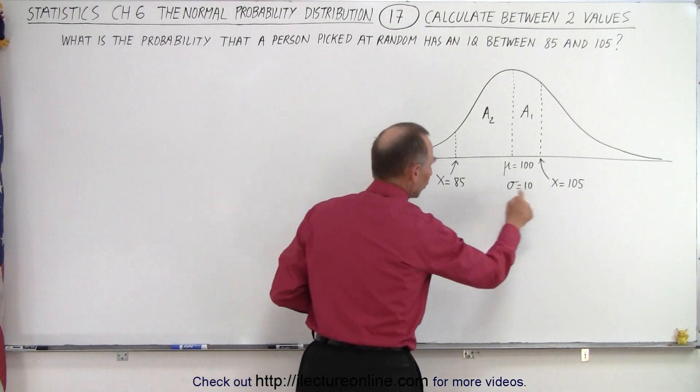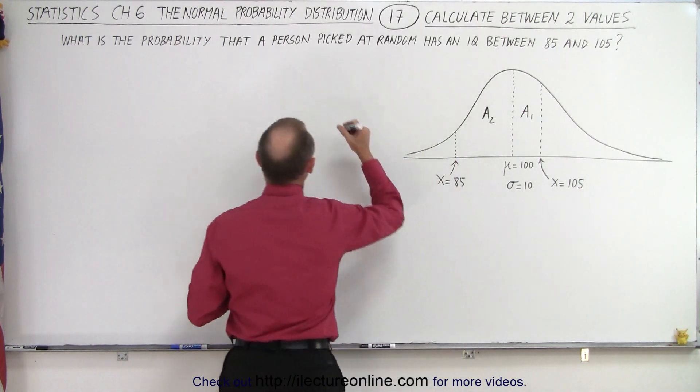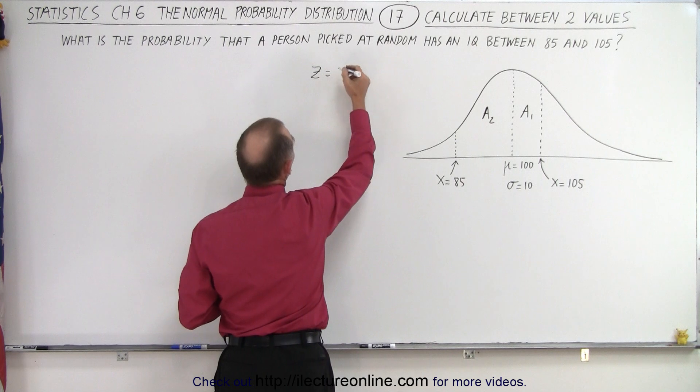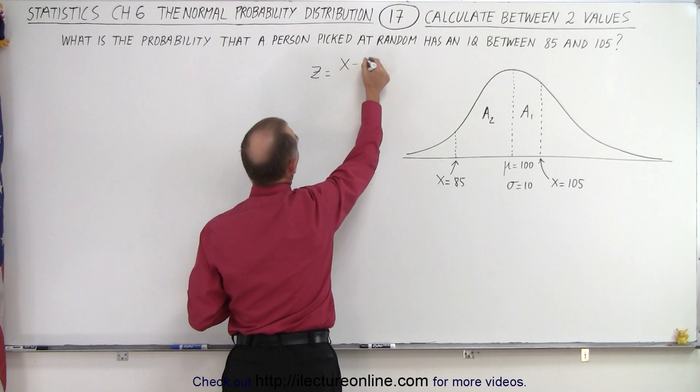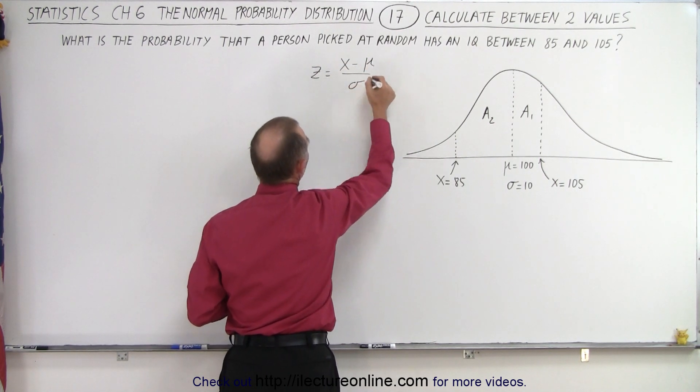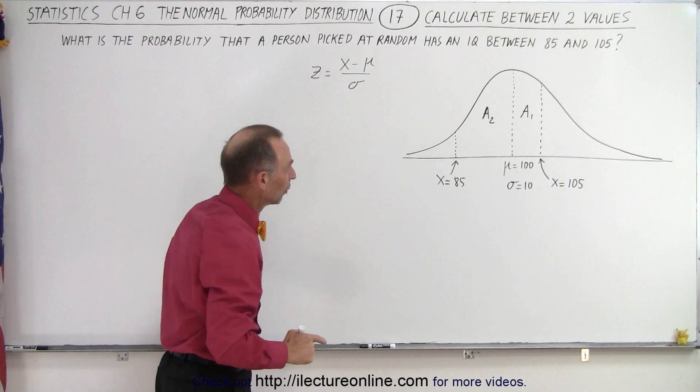Well we need to find the z-scores of both of these. To find the z-score we know that z is equal to the difference between the point x and the mean divided by the standard deviation sigma.